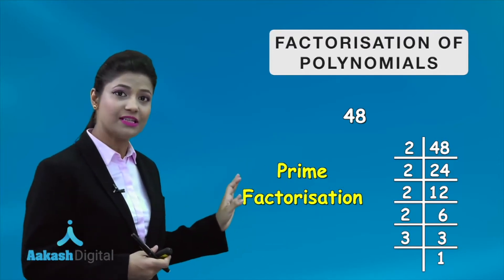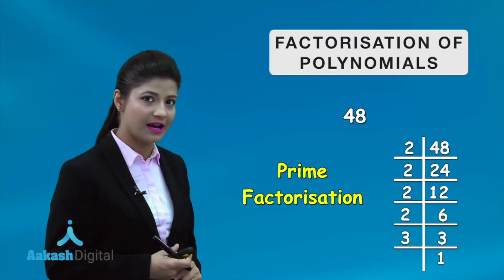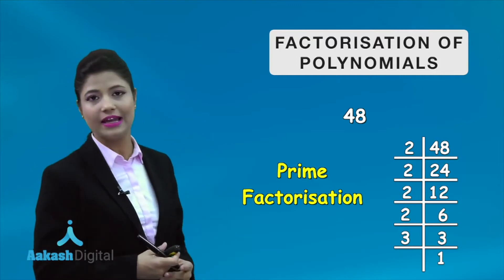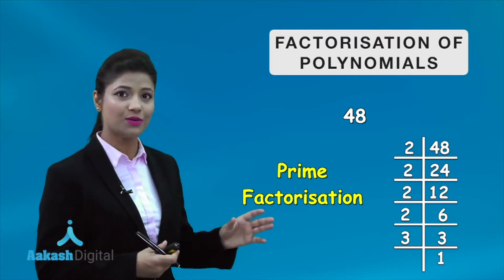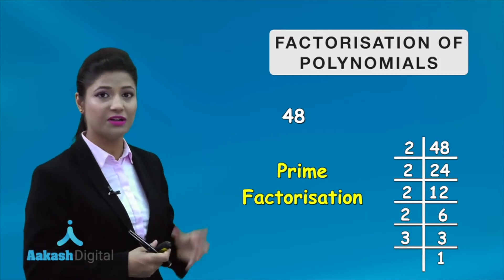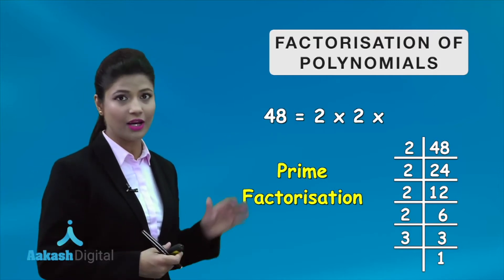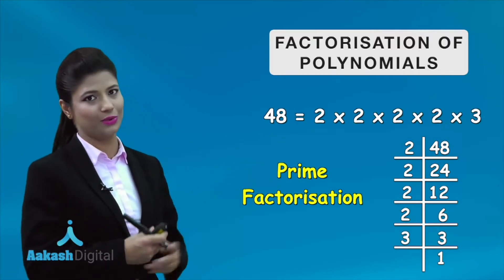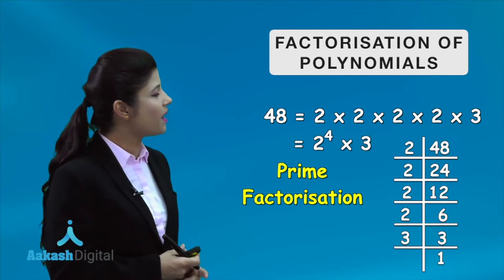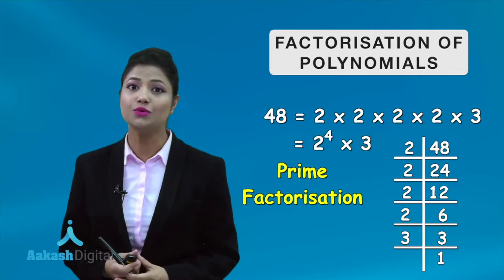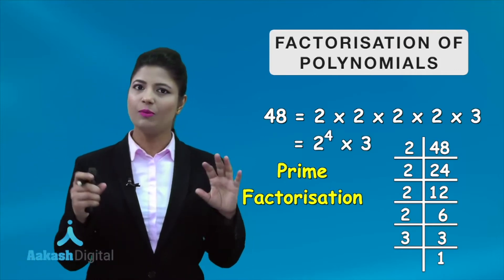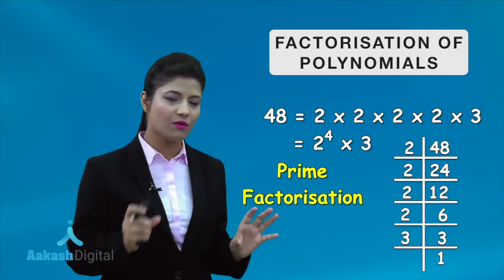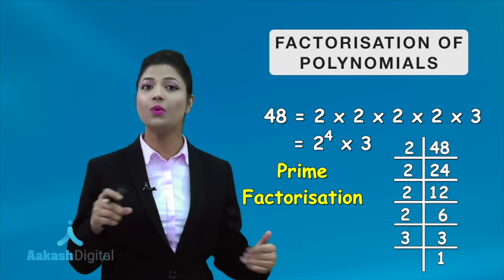On prime factorization of 48, you will find that it contains the factors 2 and 3, and it can be written as 2 × 2 × 2 × 2 × 3, which is 2 raised to the power 4 into 3. By this prime factorization, we have broken the number into smaller parts.